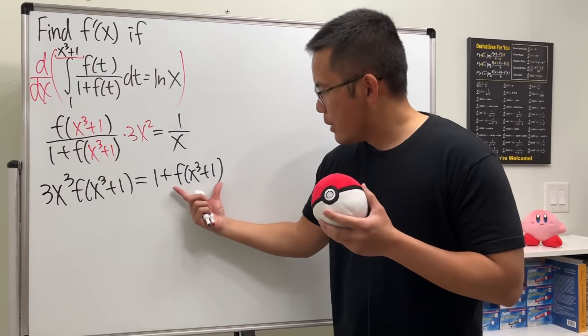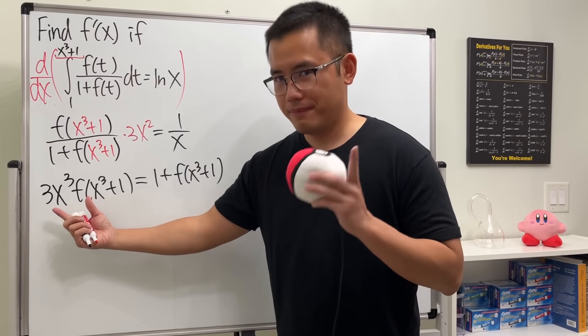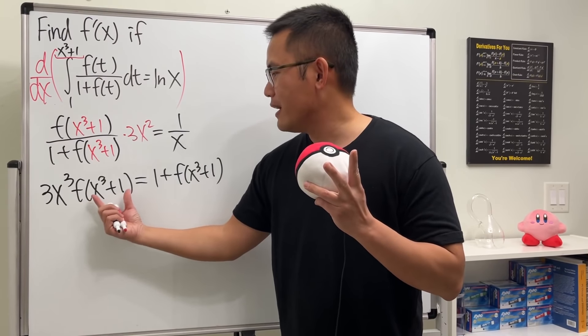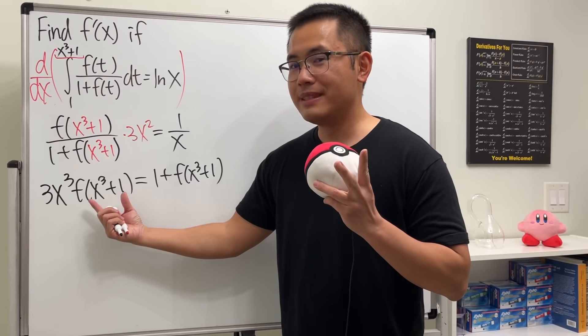So first step, bring this to the other side. Step two, factor out the f(x^3 + 1). Third step, divide the 3x^3 - 1 on both sides.